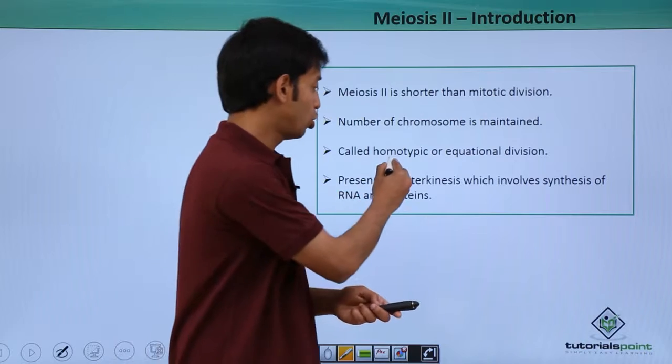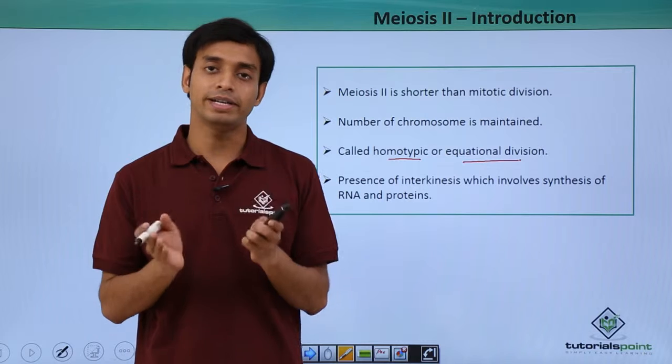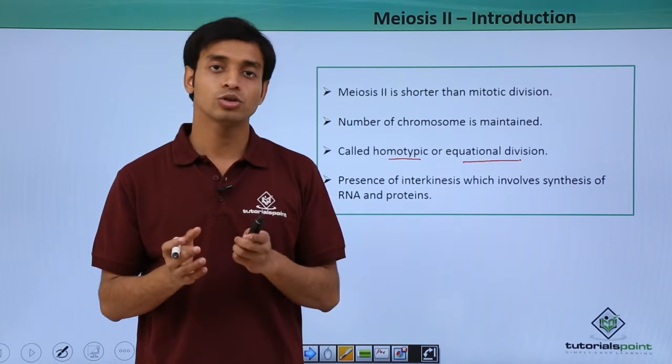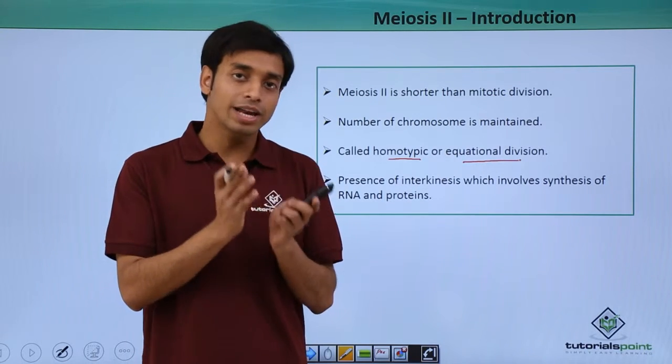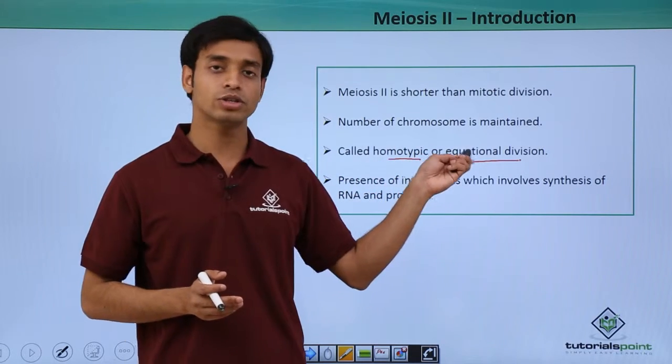This is called homotypic or equational division. Why equational division? Because the chromosome numbers are maintained and not getting reduced. So the parental cell will have the same number of chromosomes as the daughter cells. This is known as equational division.